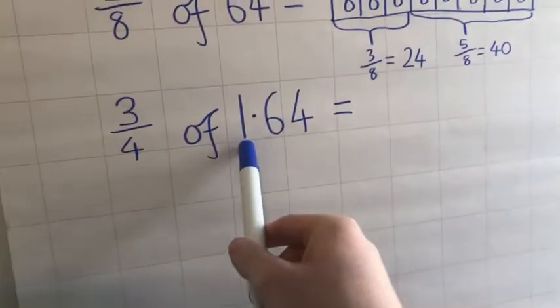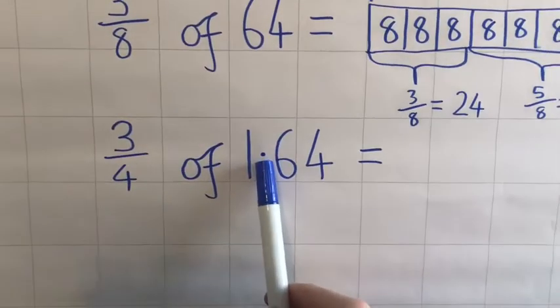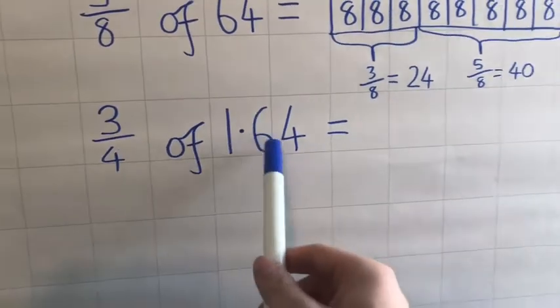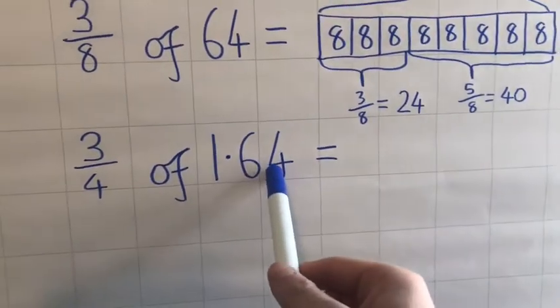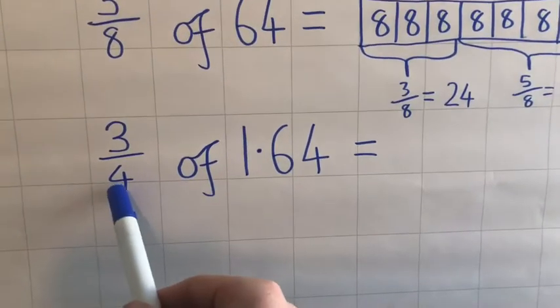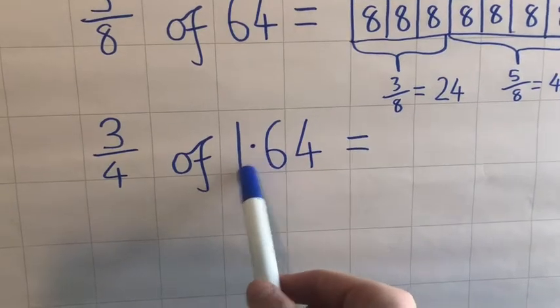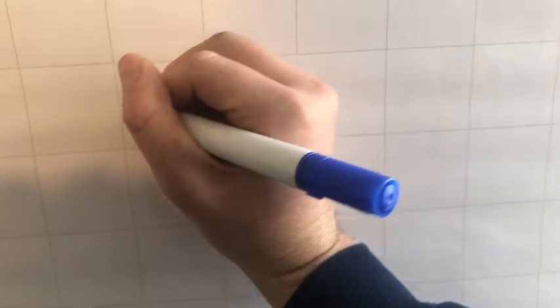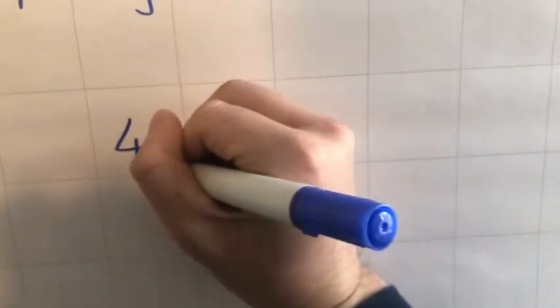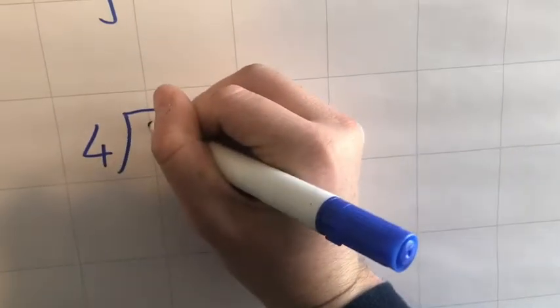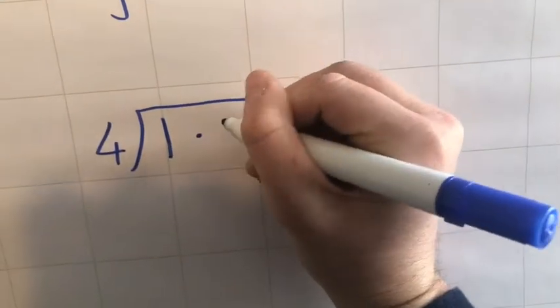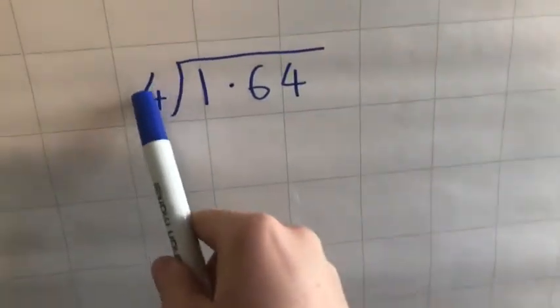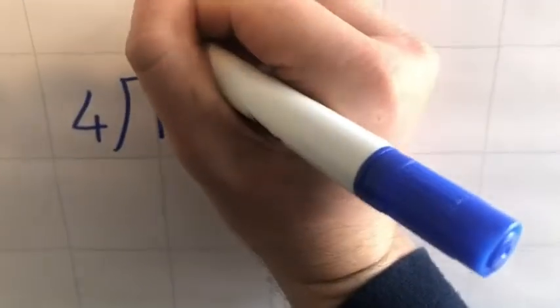Okay, now the last one I've included a decimal. Doesn't make it any more tricky, but what you might want to do is use something like bus stop method to first of all find what a quarter of 1.64 is. So let's do that first. So I'm doing fours into 1.64. Okay, so fours into one don't go, so that's going to be zero.